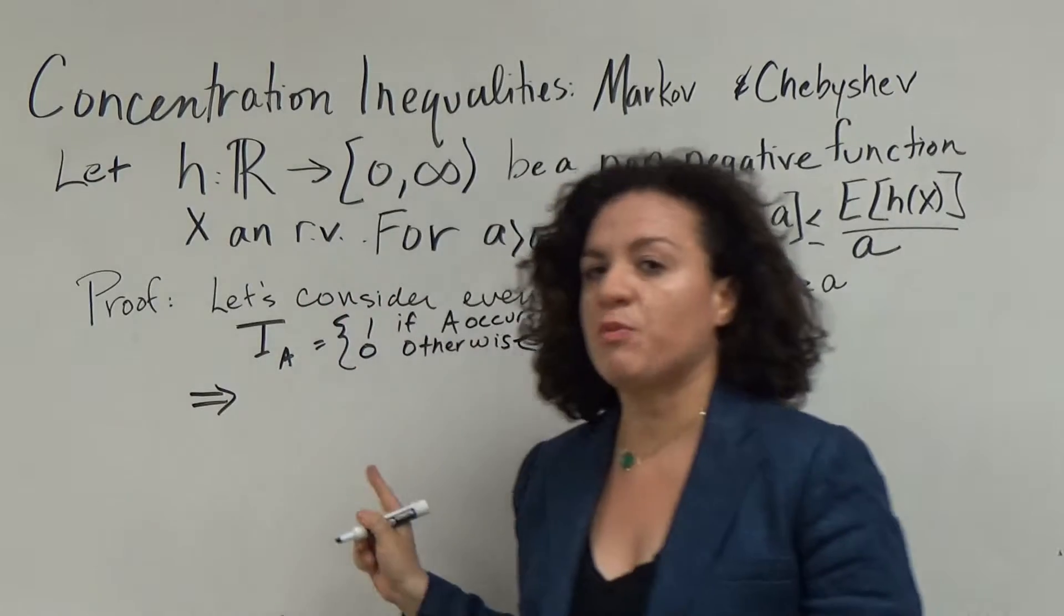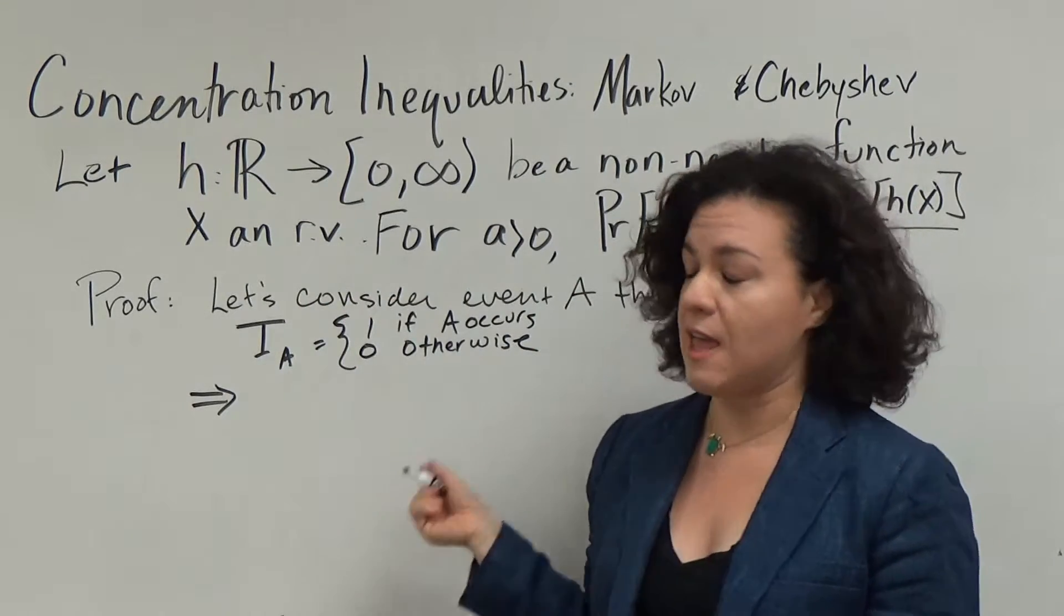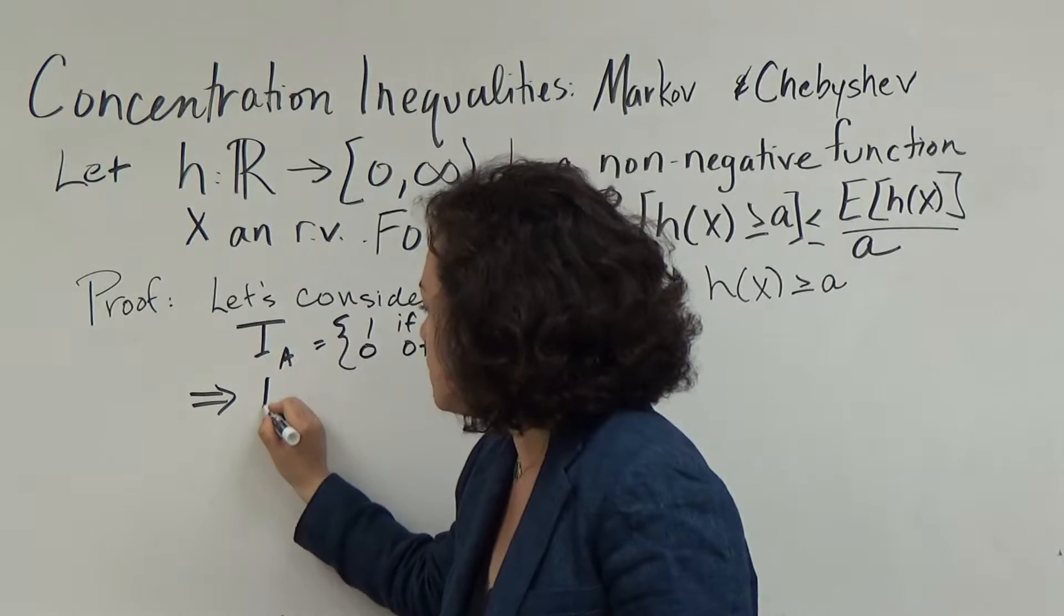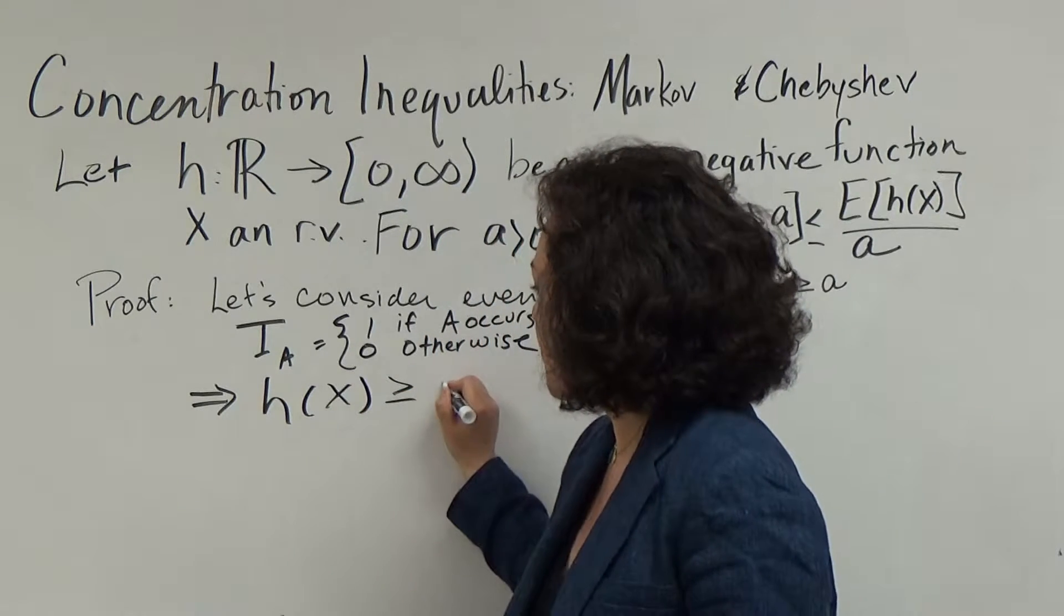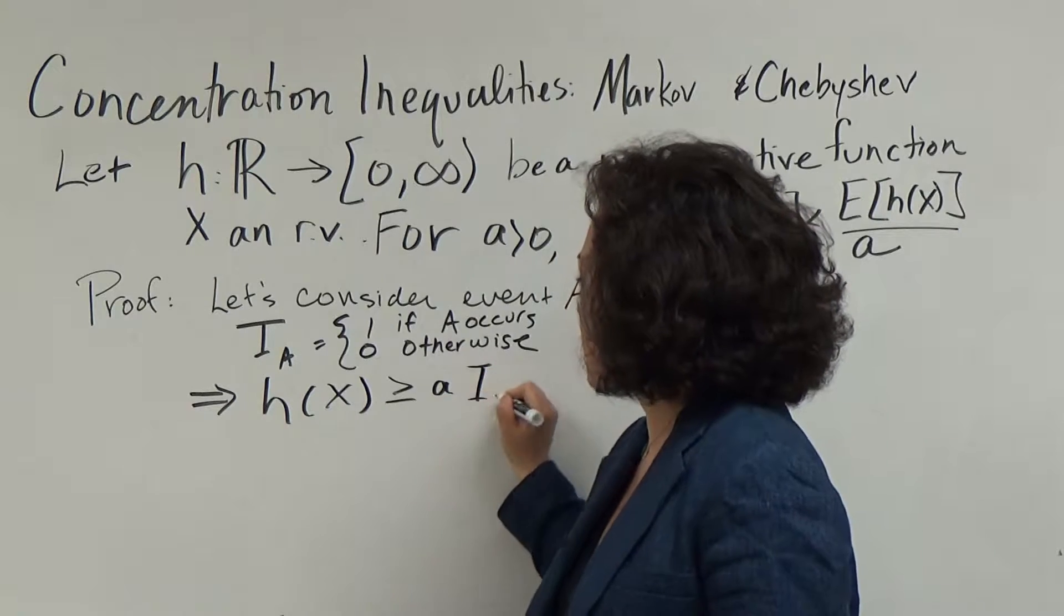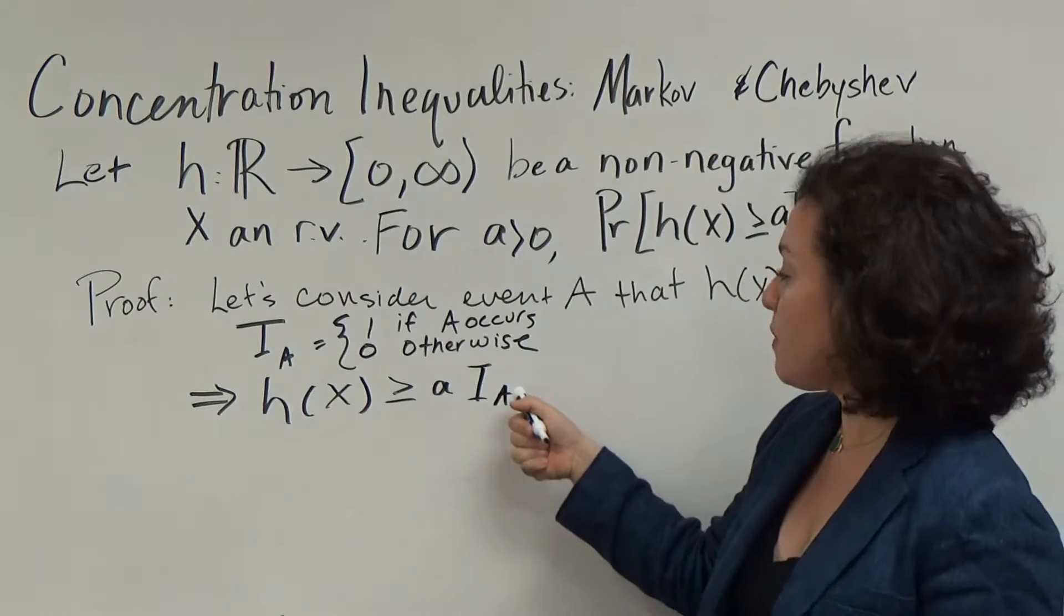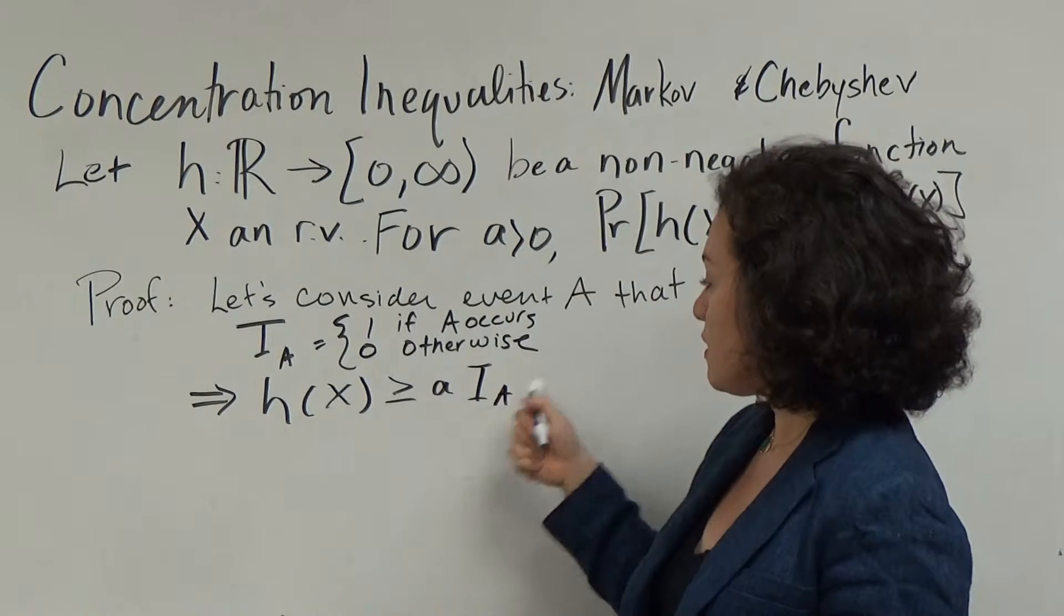Now, let's express h(x) in terms of whether the event A happens or not. So h(x) is going to be greater than or equal to a times the indicator of A. And we can see how the statement is true by considering the values of the indicator.